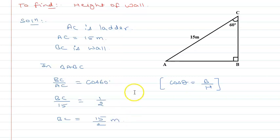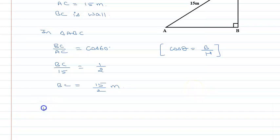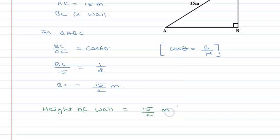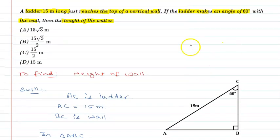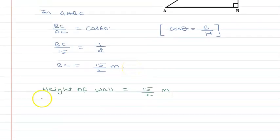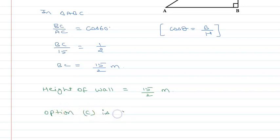BC is the wall, so the height of the wall is 15 upon 2 metres. If I check option C, we match our answer. Hence, option C is correct. I hope that you understood. Thank you.